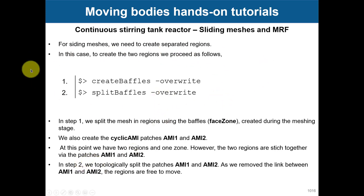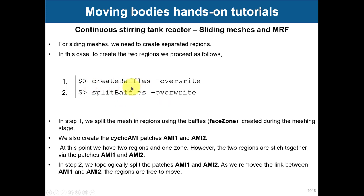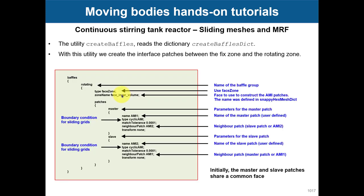When you create baffles, you create two face zones that exchange information using the cyclic AMI boundary condition — one face is fixed and the other is moving. Then you use the splitBaffles command to topologically disconnect them. Before splitting, the baffles are connected; after running splitBaffles, you disconnect them so one face zone can move independently.